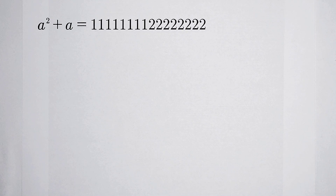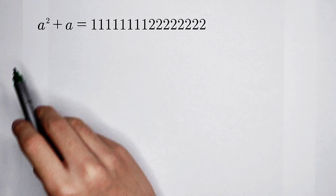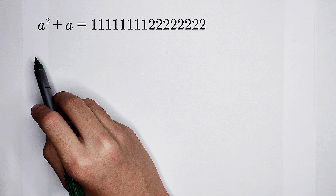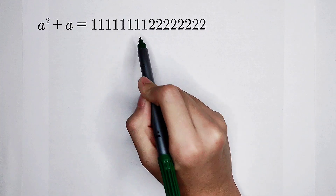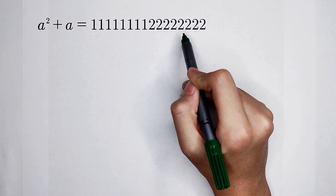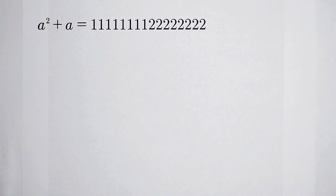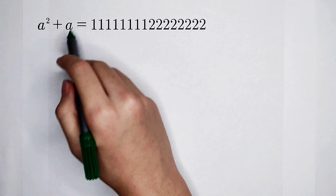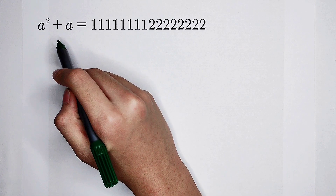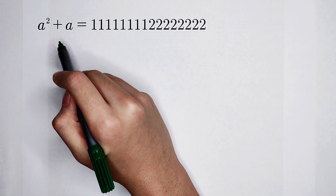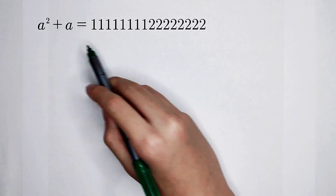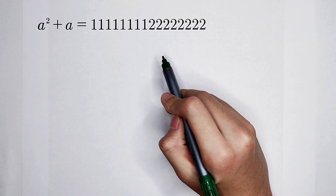Welcome to Math Window. We have this string equation: a squared plus a is equal to 111111112222222. The left hand side is a very simple term of a, but the right hand side is a huge number.